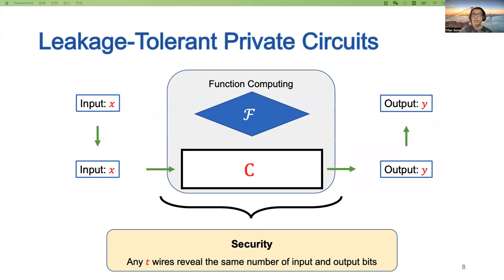A stronger variant of private circuits, referred to as leakage-tolerant private circuits, does not have an input encoder or output decoder. The security requires that any T wires reveal at most the same number of input and output bits. With the leakage-tolerant solution, we can obtain a leakage-resilient private circuit by using an encoding scheme secure against T-probing attacks, such as the canonical encoder. In particular, we can also jointly encode all input bits with less randomness.